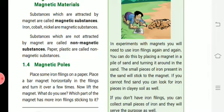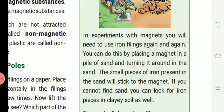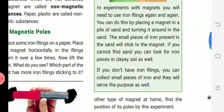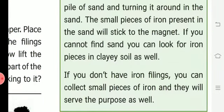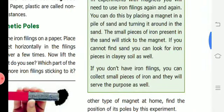You can do this by placing a magnet in a pile of sand. Magnet, just add it to the sand. You can do this by placing a magnet in a pile of sand and turning it around in the sand. The small pieces of iron present in the sand will definitely stick to the magnet. You can try this experiment.